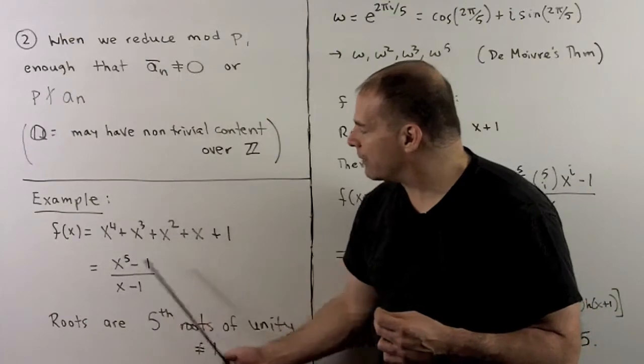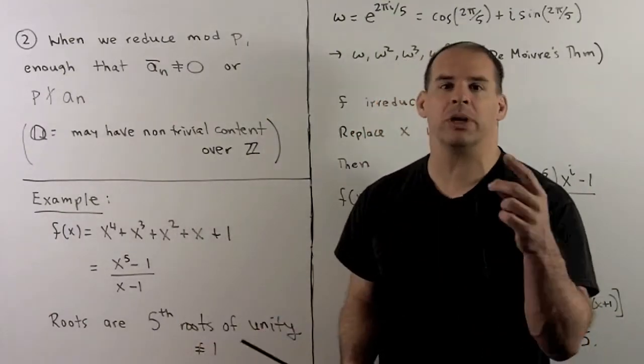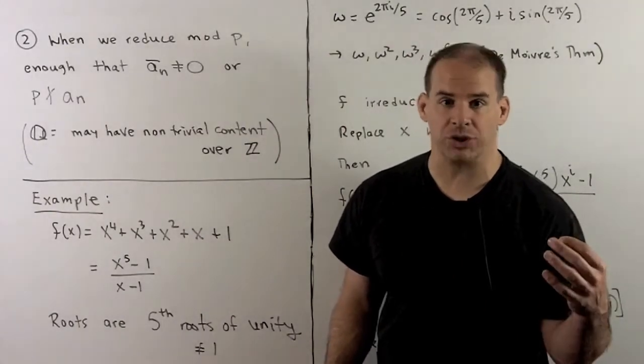Eisenstein's going to guarantee that this is irreducible. So not only can we not split off linear factors, but we can't factor it into a product of two irreducible quadratics over the integers or rationals.